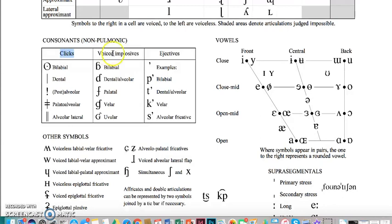These consonants are things like clicks, which are found in some African languages, and implosives, which are made with airflow actually going into the lungs, the air being breathed in.